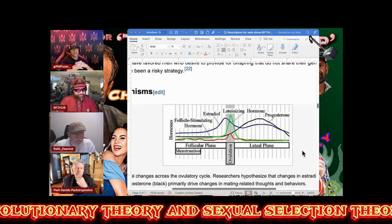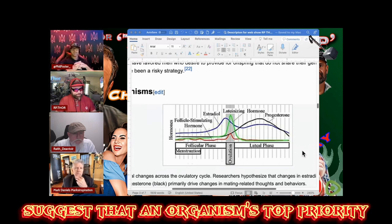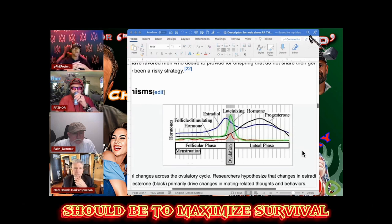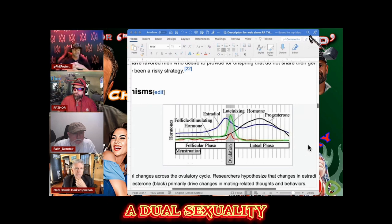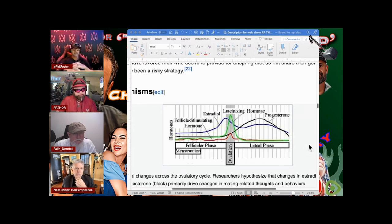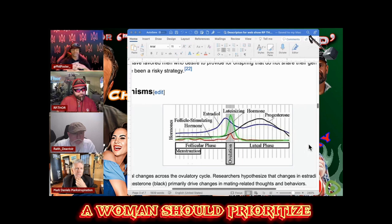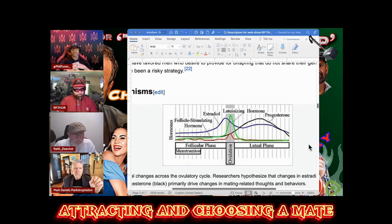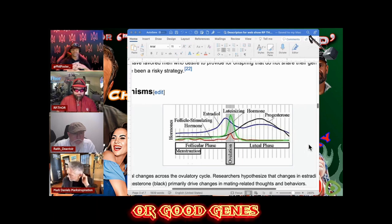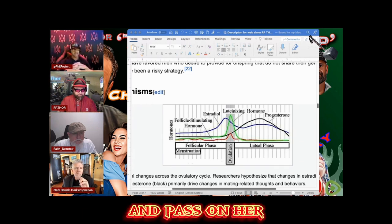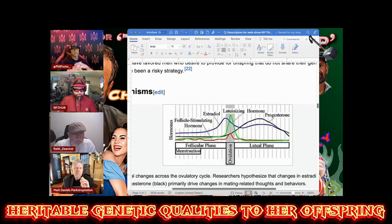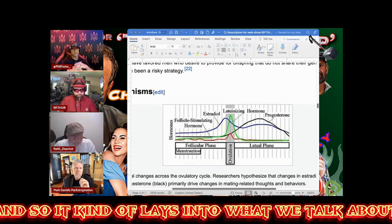Evolutionary theory and sexual selection theory suggests an organism's top priority should be to maximize survival and reproductive success. The ovulatory shift hypothesis proposes that women possess a dual sexuality where during the fertility window a woman should prioritize attracting and choosing a mate with the best genetic quality or good genes, since this is the only time she can become pregnant.